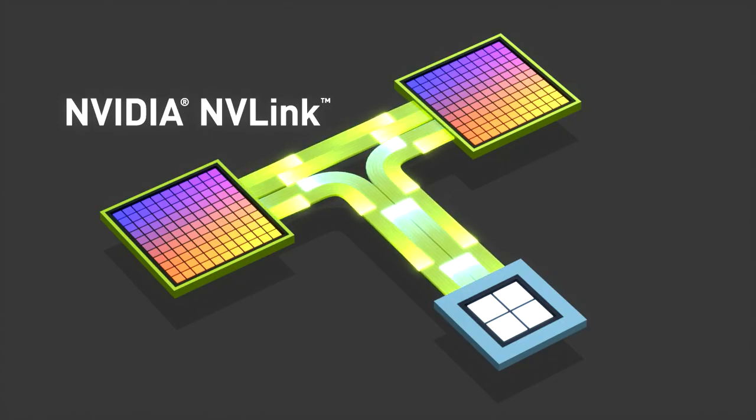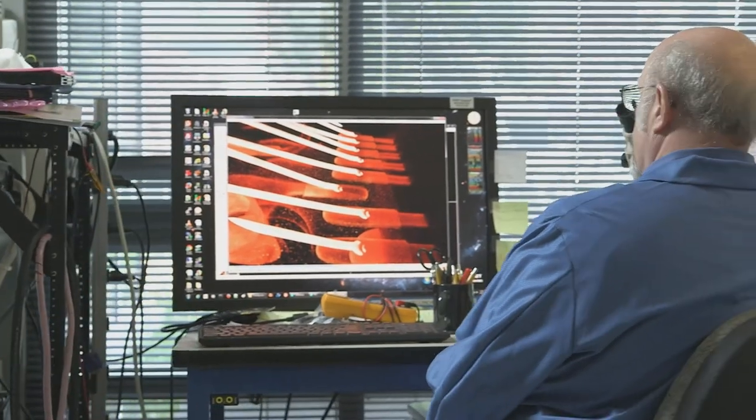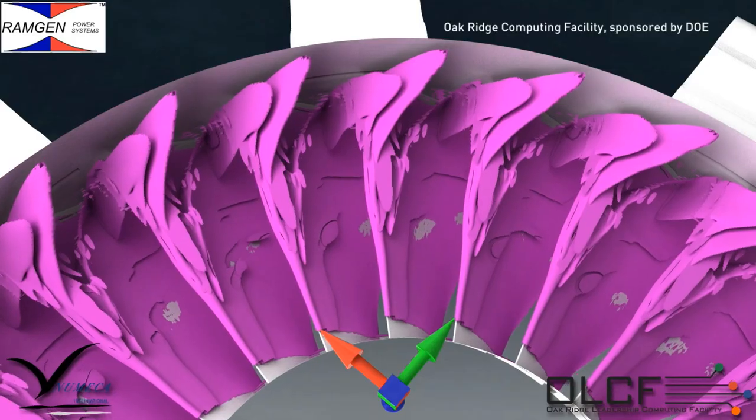NVLink is really one of the most critical technologies for the Summit system. NVLink is NVIDIA's high-performance interconnection between the NVIDIA GPUs and the IBM power processors, so that you can move data from one to the other at very, very high speeds. This is really terribly important for our users, because the speed that you can move the data between the GPU and the CPU really provides an upper bound on how much performance you can get out of the system.